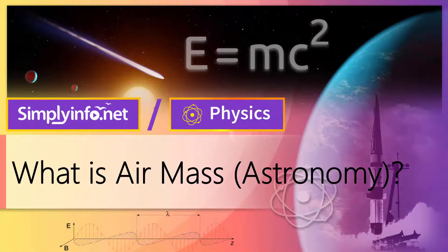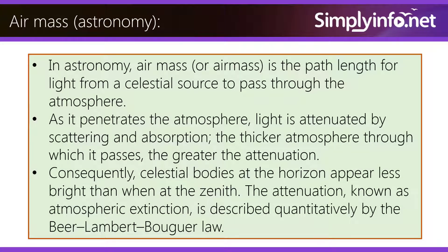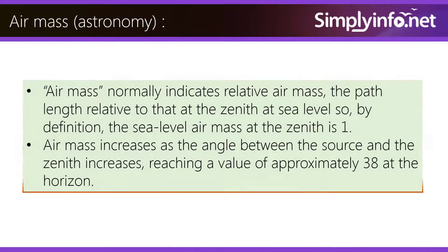In astronomy, air mass is the path length for light from a celestial source to pass through the atmosphere. As it penetrates the atmosphere, light is attenuated by scattering and absorption. The thicker the atmosphere through which it passes, the greater the attenuation. Consequently, celestial bodies at the horizon appear less bright than when at the zenith. This attenuation, known as atmospheric extinction, is described quantitatively by the Beer-Lambert-Bouguer Law.